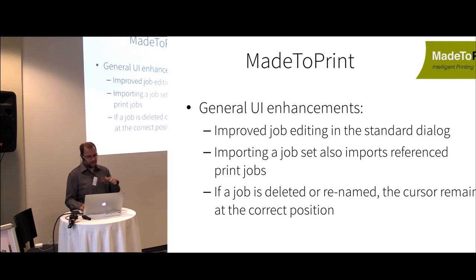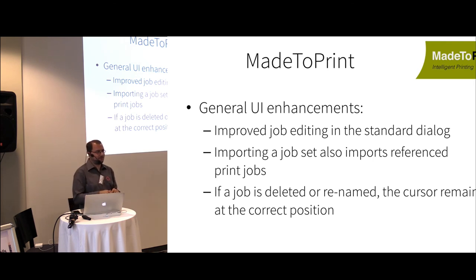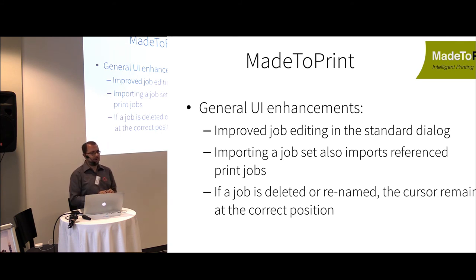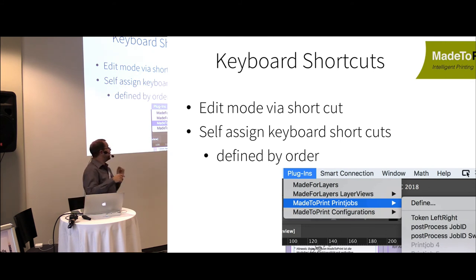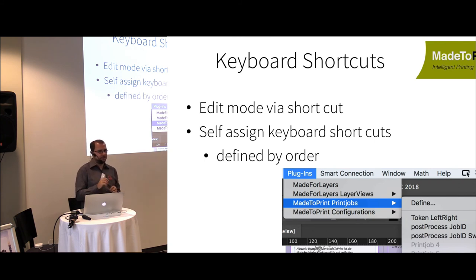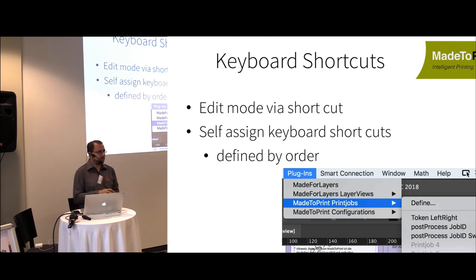Minor UX improvements in the edit dialogue: when you delete or rename a job, the cursor previously jumped back to the first job — now it stays in position. For jobs in the menu list, they are ordered as in the Made to Print menu. If you have more than 10, you use the job rating or priority to push them up and assign keyboard shortcuts.